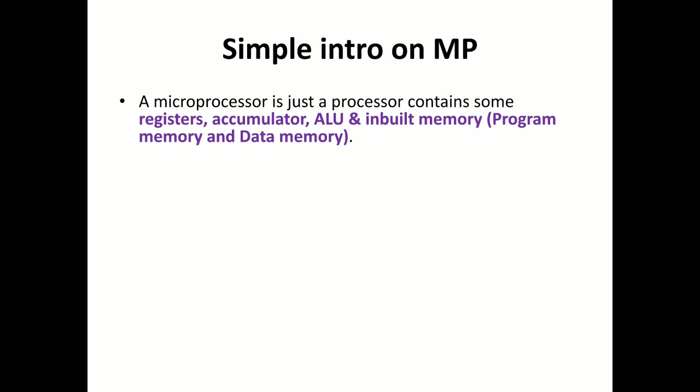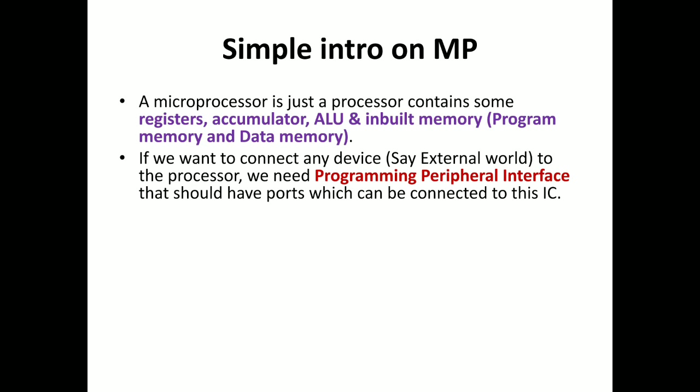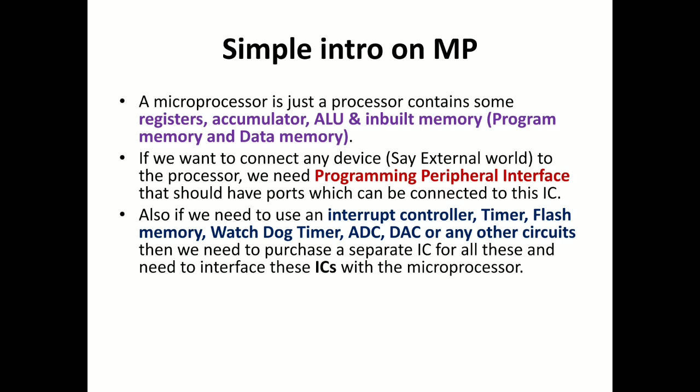Going somewhat deeper theoretically: a microprocessor is a single chip containing registers, accumulator, ALU, and inbuilt program and data memory. If you want to communicate with the external world, you need a PPI — a Programmable Peripheral Interface — with a port connected to the microprocessor IC. If you need more components like an interrupt controller, timer, flash, watchdog timer, or DAC, you have to use an individual IC for each, which makes the design more costly.